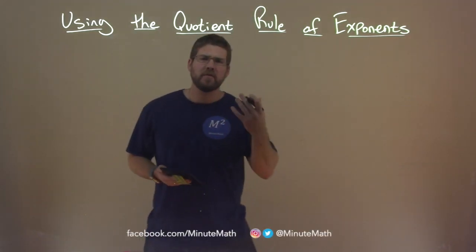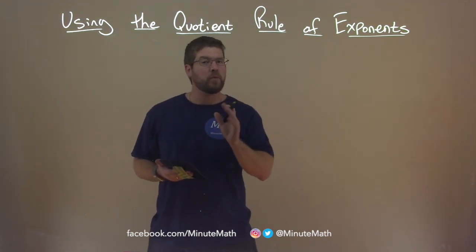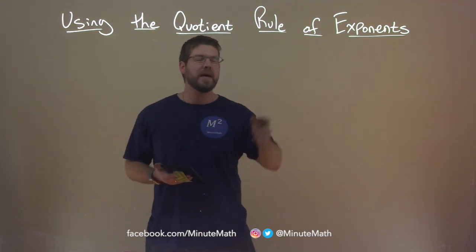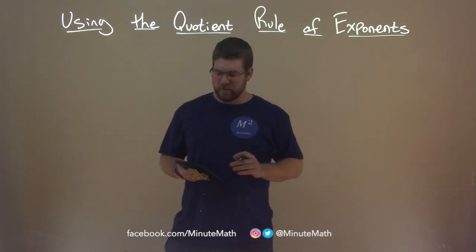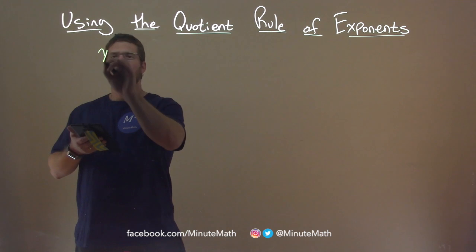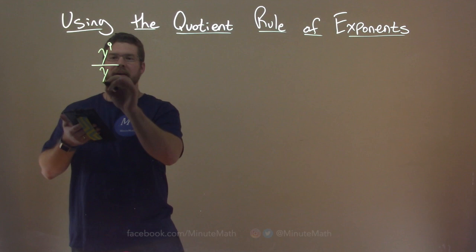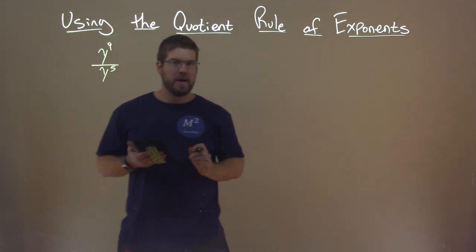Now, the first thing you should be thinking about is quotient. Well, quotient is division, so that's when we're going to apply this rule, and when we have exponents. So, let's see a quick example here. Let's say I have y to the ninth power, and I want to divide that by y to the fifth power.